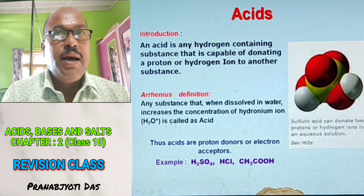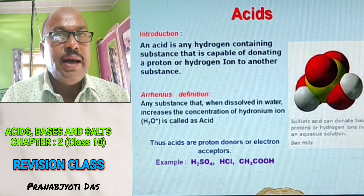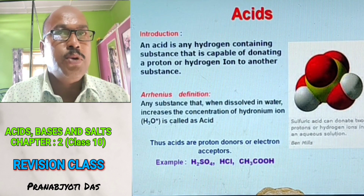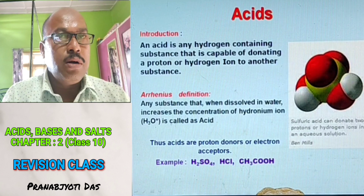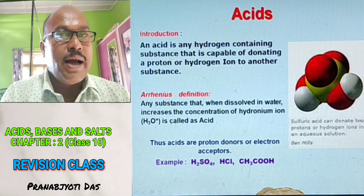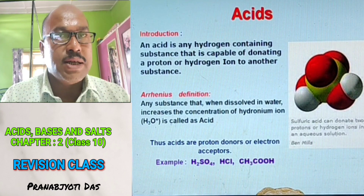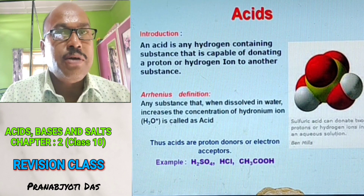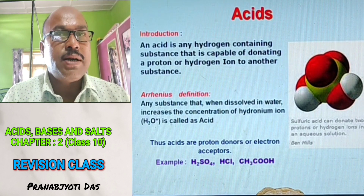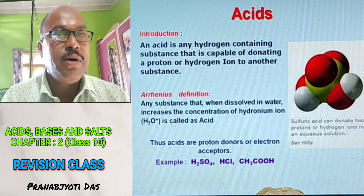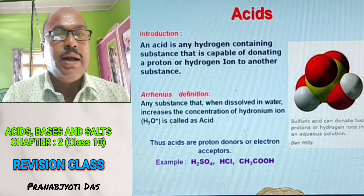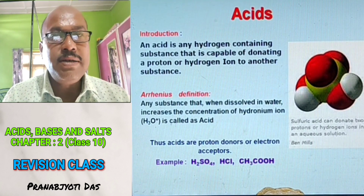What's an acid? An acid is any hydrogen-containing substance that is capable of donating a proton or hydrogen ion to another substance. Arrhenius described the definition of acid as any substance that when dissolved in water increases the concentration of hydrogen ion, that is H3O positive ion, and this type of chemical substances are called acids.